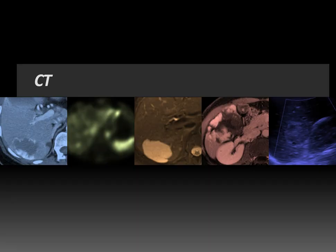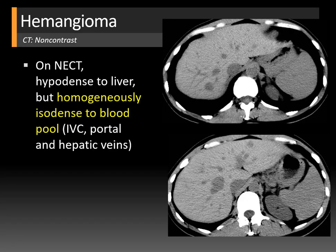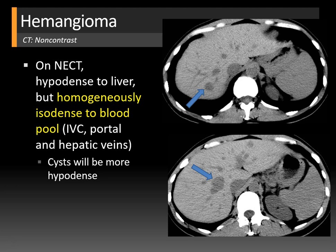On CT non-contrast images, hemangiomas tend to be hypodense to the liver parenchyma but homogeneously isodense to the blood pool — the same density as the IVC, portal, and hepatic veins. You can see hemangiomas blending with adjacent hepatic vasculature. Cysts tend to be more hypodense than the blood pool, while metastases and malignant lesions are often more heterogeneous.